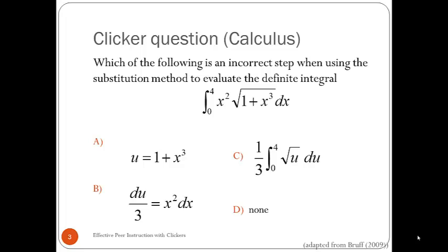U is 1 plus X cubed, DU is 3X squared DX. Here's one third zero to four of root U DU. Oh, look at that. I forgot to change the limits when I did the substitution. Yeah, that's the problem right there. That's the kind of conversation that we want our math students to be having.